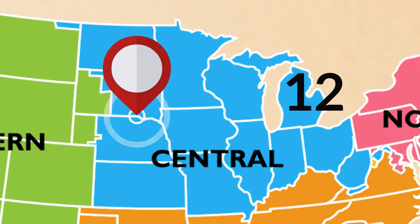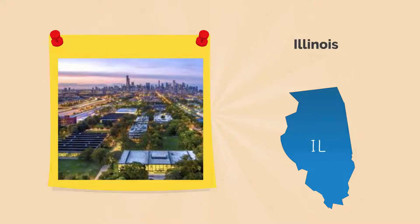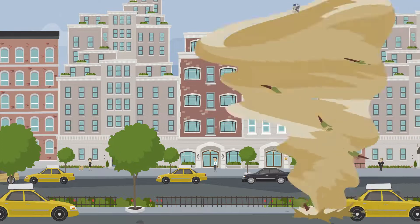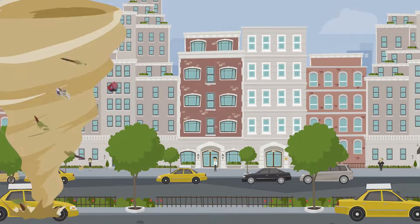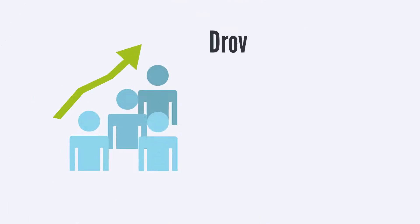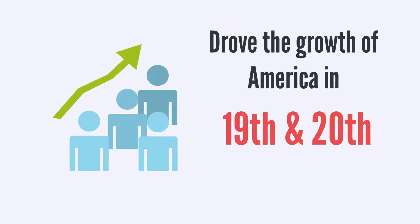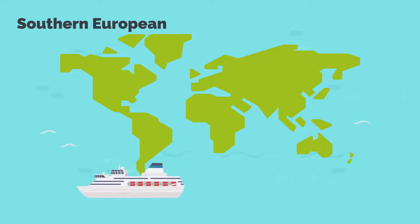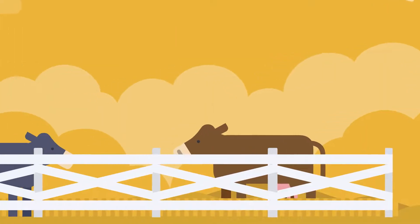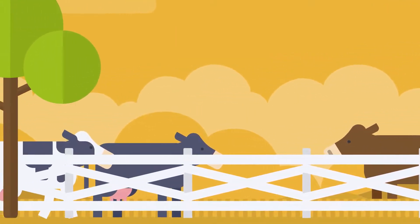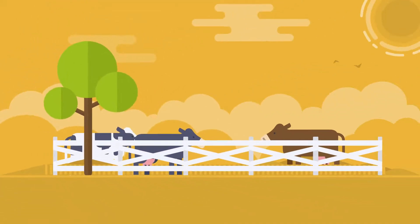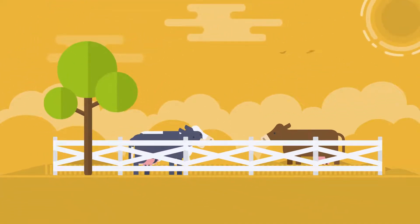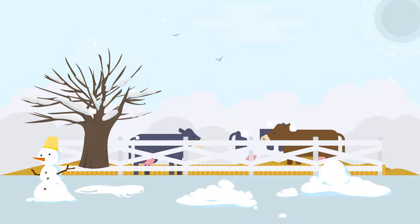The Midwest contains 12 states. Some notable Midwestern states include Illinois, Ohio, and Kansas. These states are home to the plains, tornadoes, and make up much of the Rust Belt, which was known for its older industrial areas that drove the growth of America in the 19th and 20th centuries. Originally, the Midwest was settled by a large number of Southern European and German immigrants. Today, the Midwest is sparsely populated and consists predominantly of farmland and cattle grazing. This region typically has fluctuating weather patterns, ranging from warm temperatures to snow in a single week. Crazy, huh?